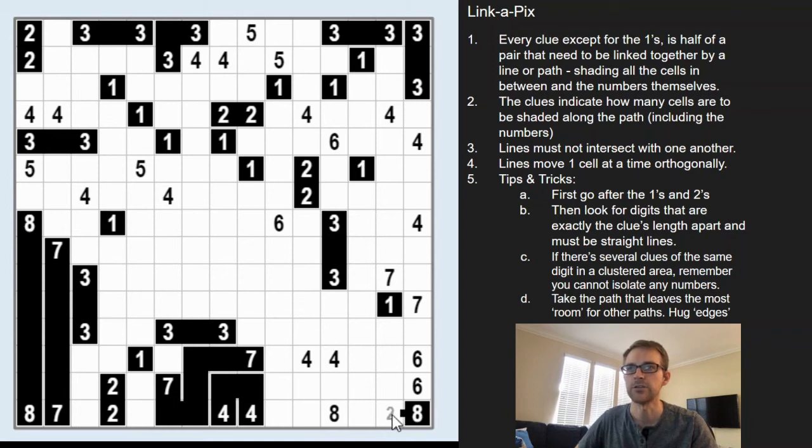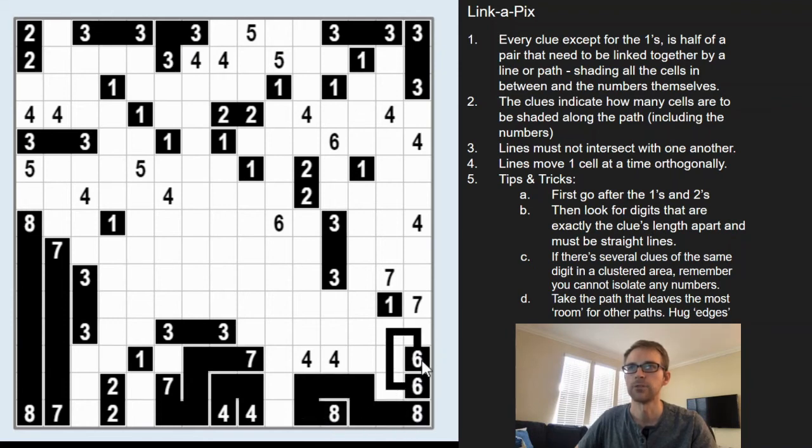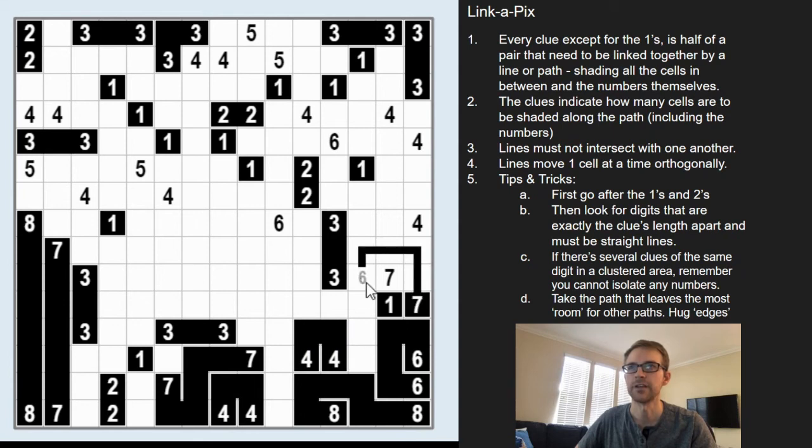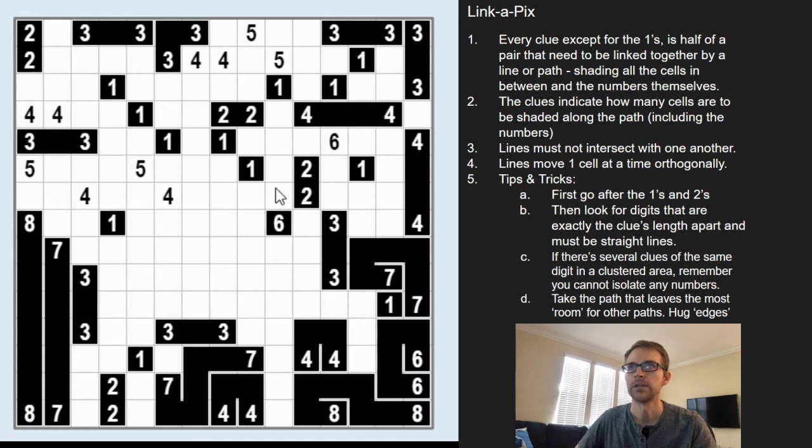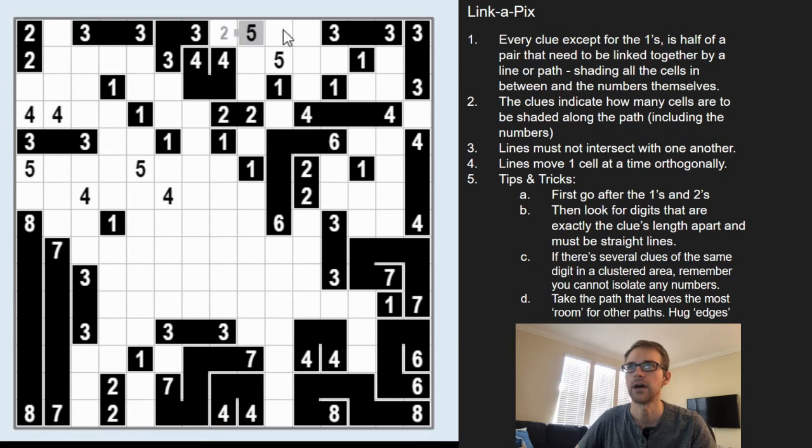Same thing with this eight, you can't come up here because you're gonna block these sixes. And so you always have to leave room for the other numbers to connect. And so this seven, I think, comes around like that. These four connect, and so I'll just quickly finish this puzzle off so you can see how it's solved.